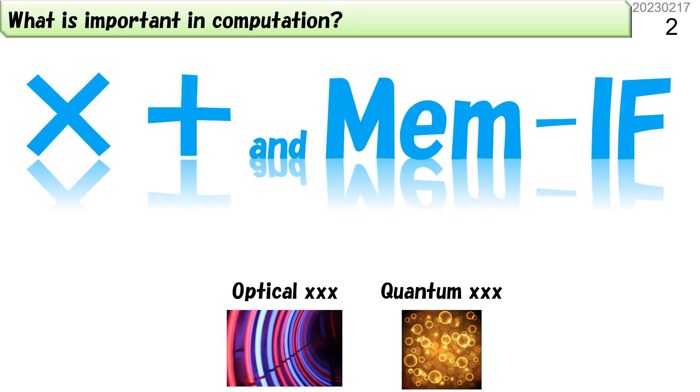So, what kind of calculations are fundamental in computers? Only multiplication and addition. However, the most critical part of practical and efficient computers is the memory interface. If optical and quantum computers have low-power memory interface, they will be candidates for future platforms.